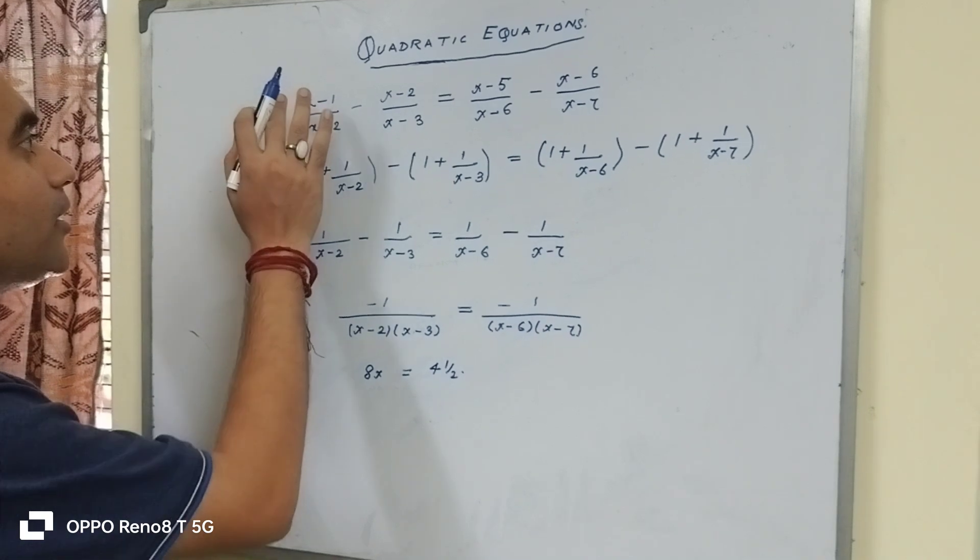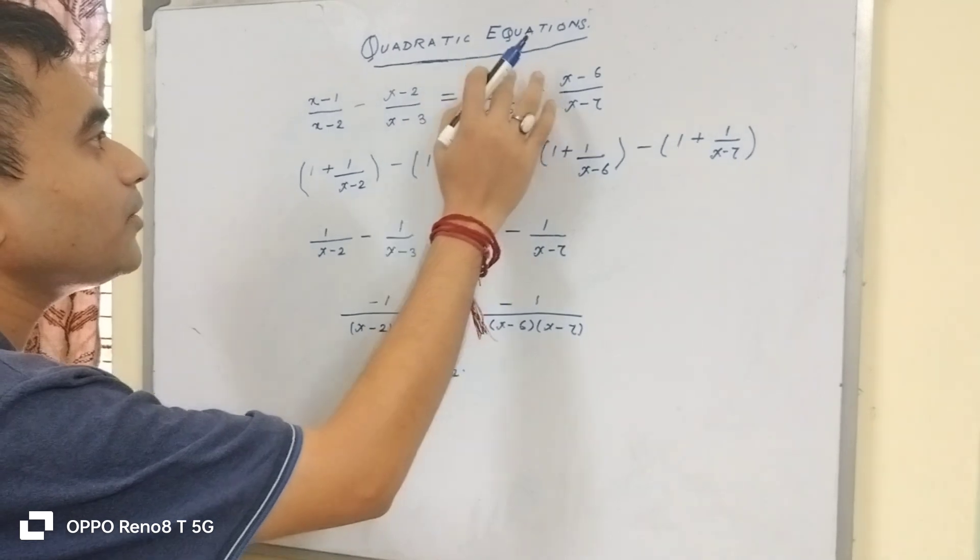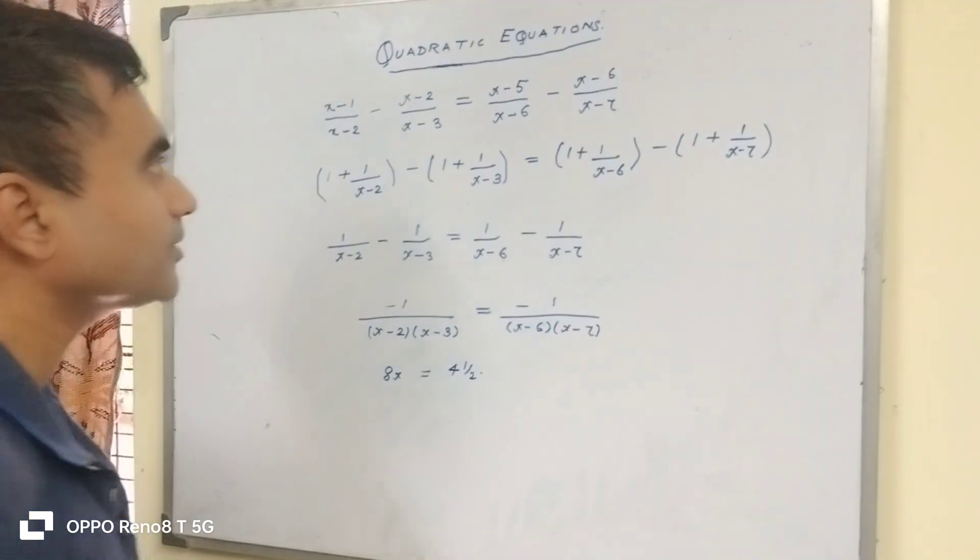(x-1)/(x-2) minus (x-2)/(x-3) is equal to (x-5)/(x-6) minus (x-6)/(x-3).